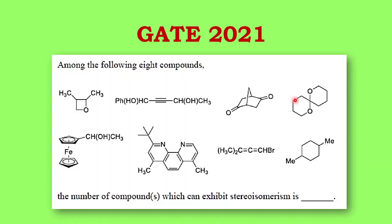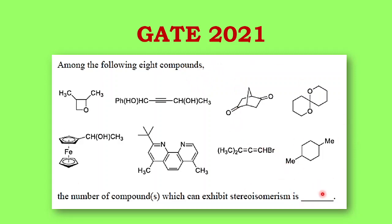Let us see the question. Among the following eight compounds, the number of compounds which can exhibit stereoisomerism is dash. This question is a NAT type or numerical answer type question where we have to solve the question and answer and enter a whole number.